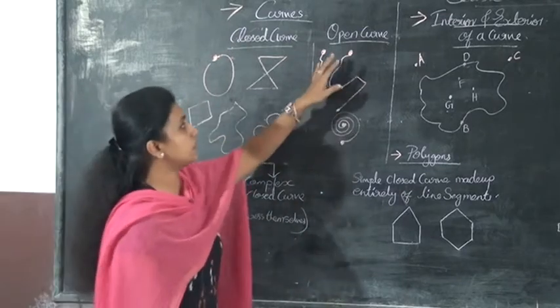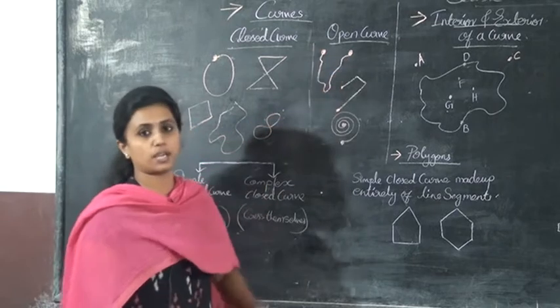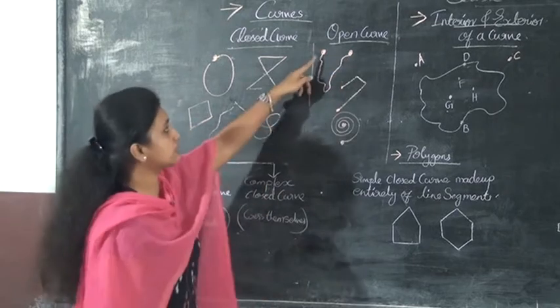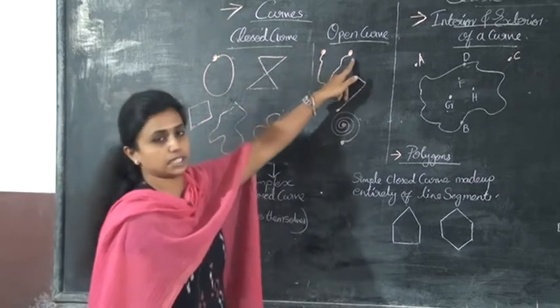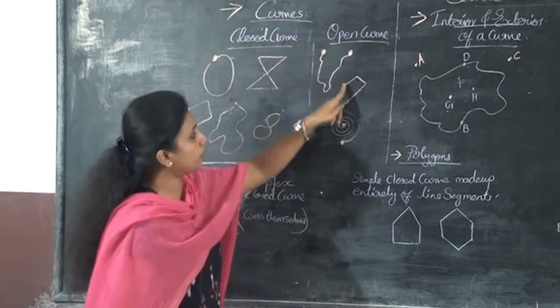Next one is open curve. In an open curve, the starting point and ending point are different. This is the open curve.